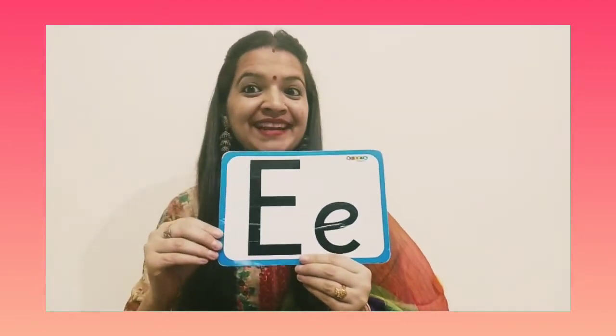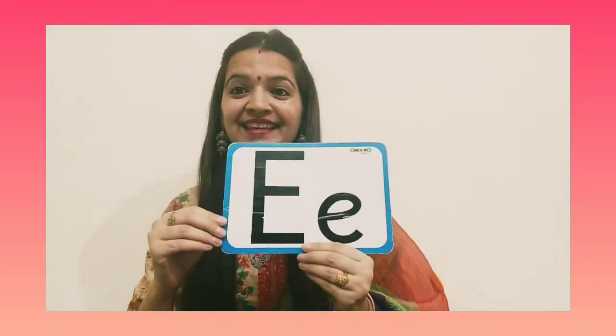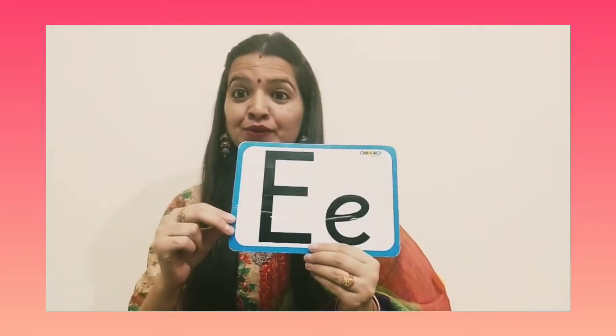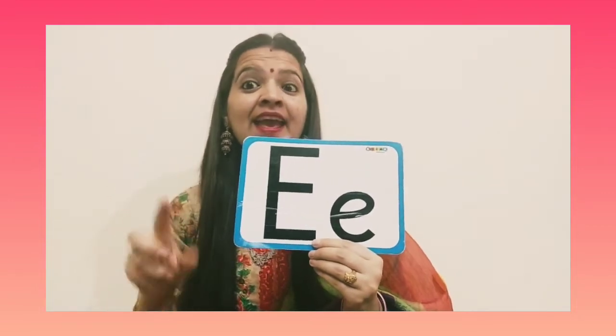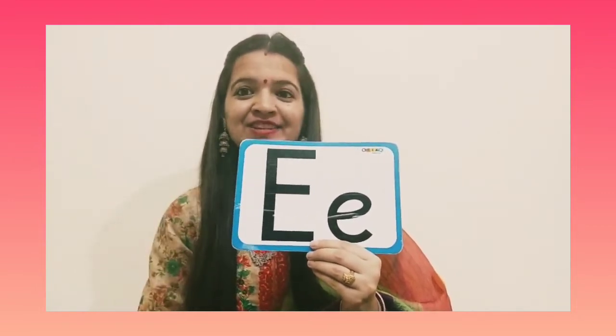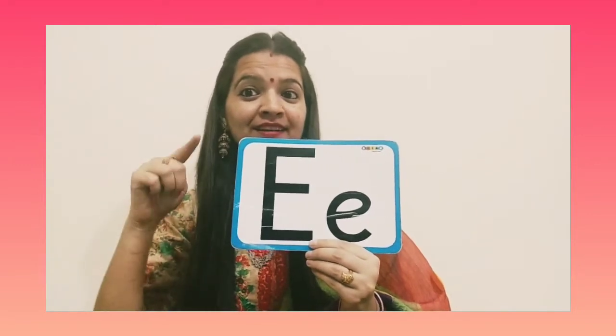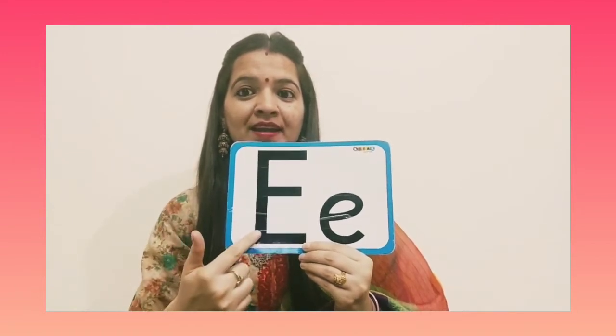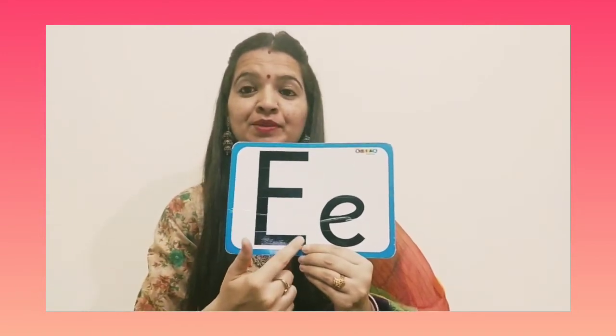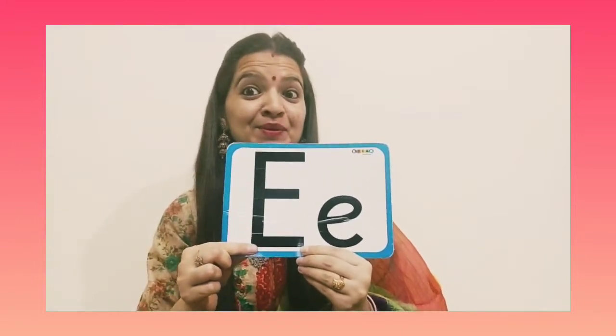See now, which letter it is? Letter E! Do you know, letter E has one standing line and three sleeping lines. Shall we trace with our mommy finger? Let's start: one standing line, one sleeping line, one more sleeping line, and here one more sleeping line. And this is how letter E looks like.